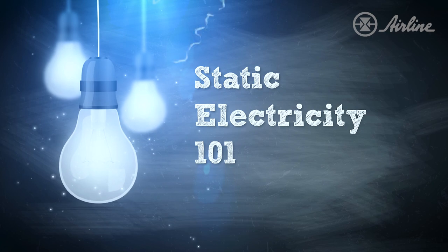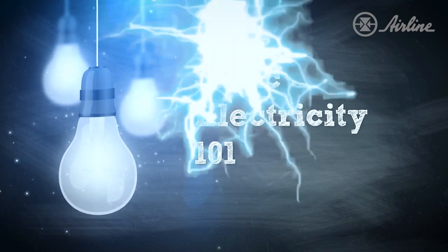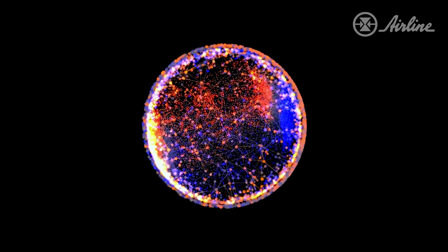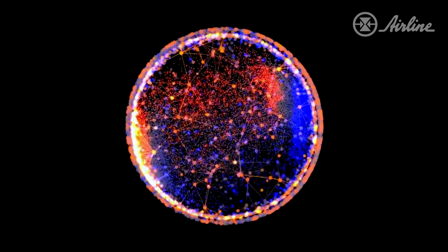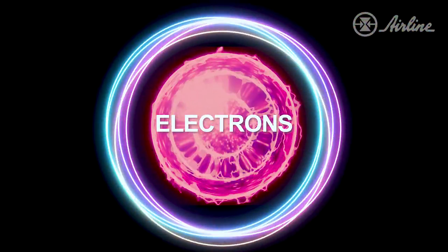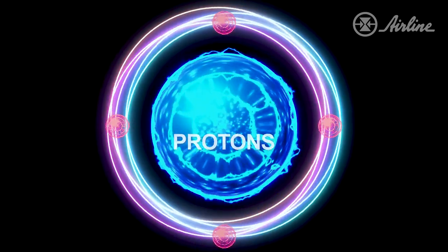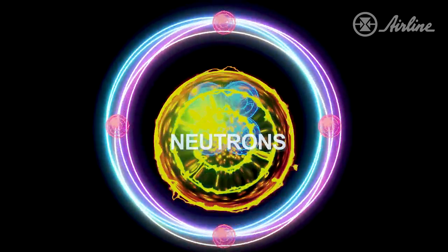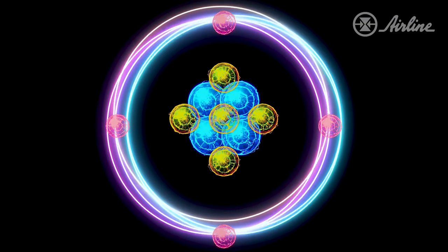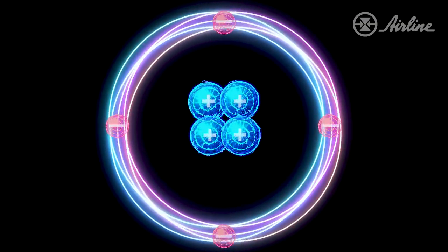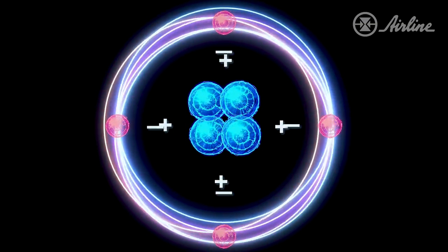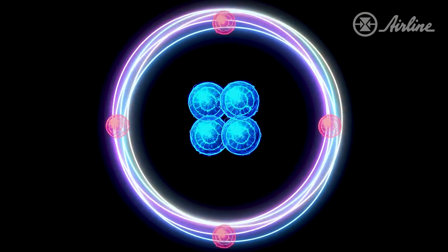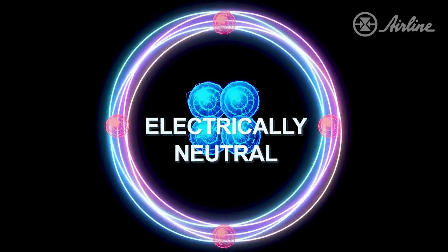So first, let's go over the basics of static electricity. All matter is made up of atoms, which consist of negatively charged electrons, positively charged protons, and neutrally charged neutrons. Normally the electrons and the protons balance each other out, which is why most matter around us is electrically neutral.